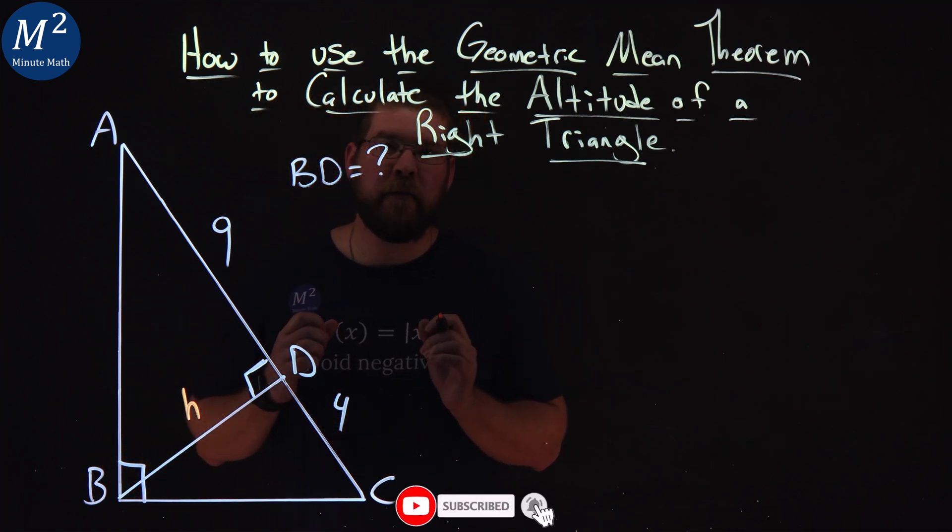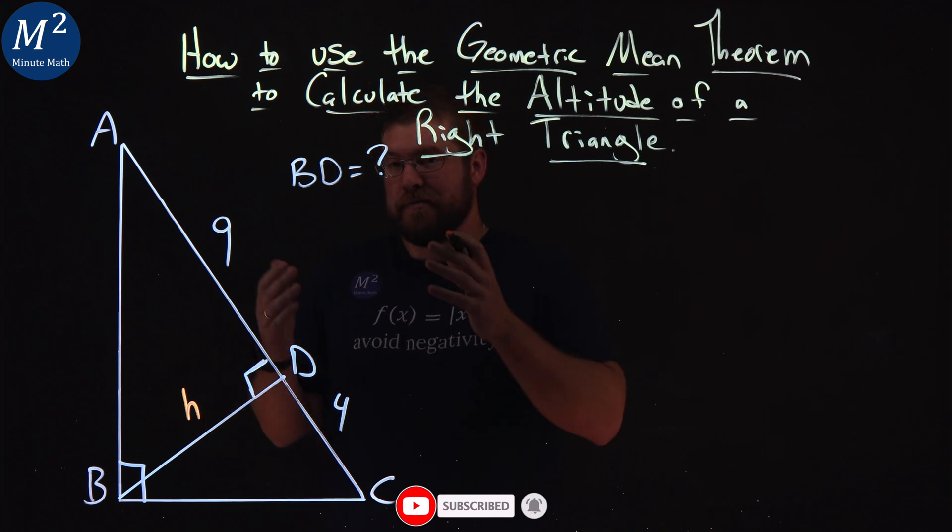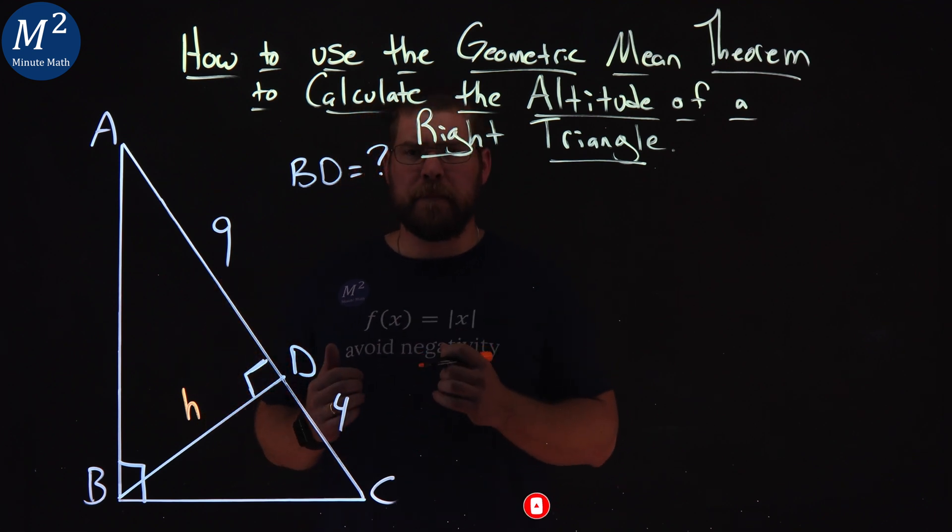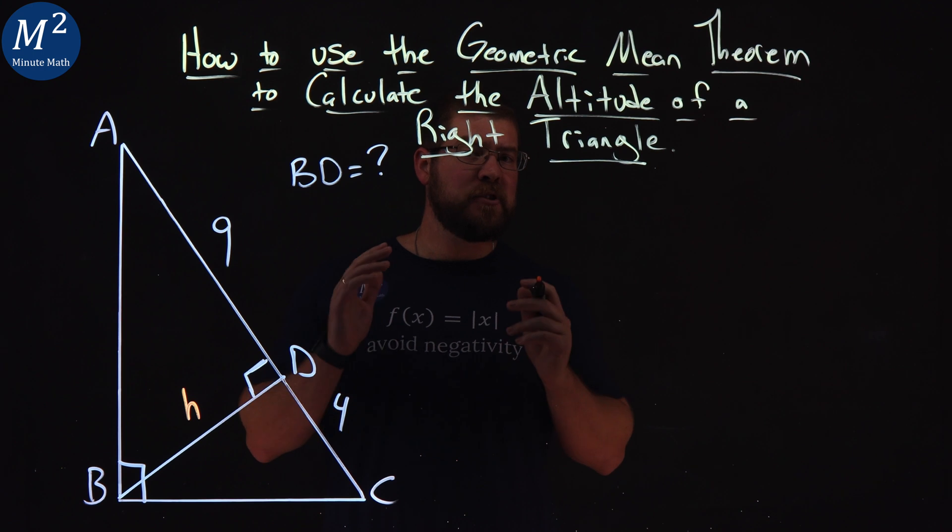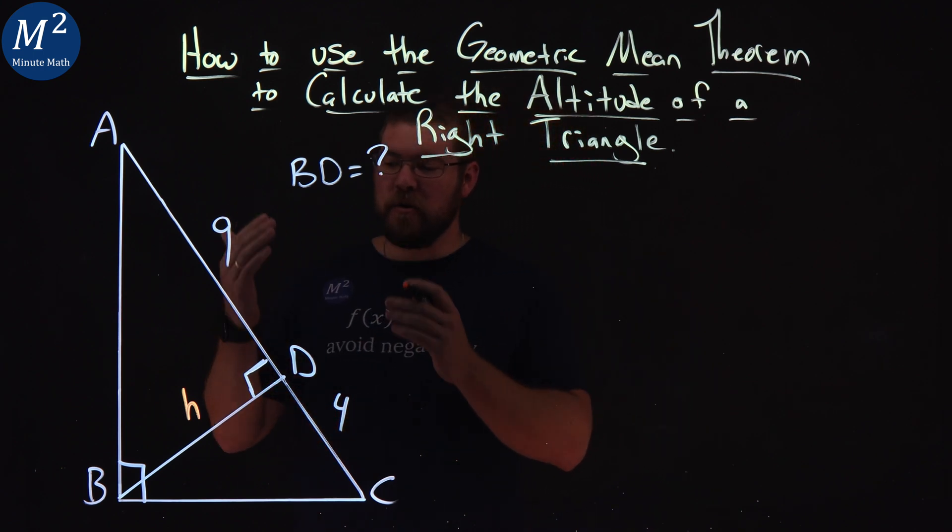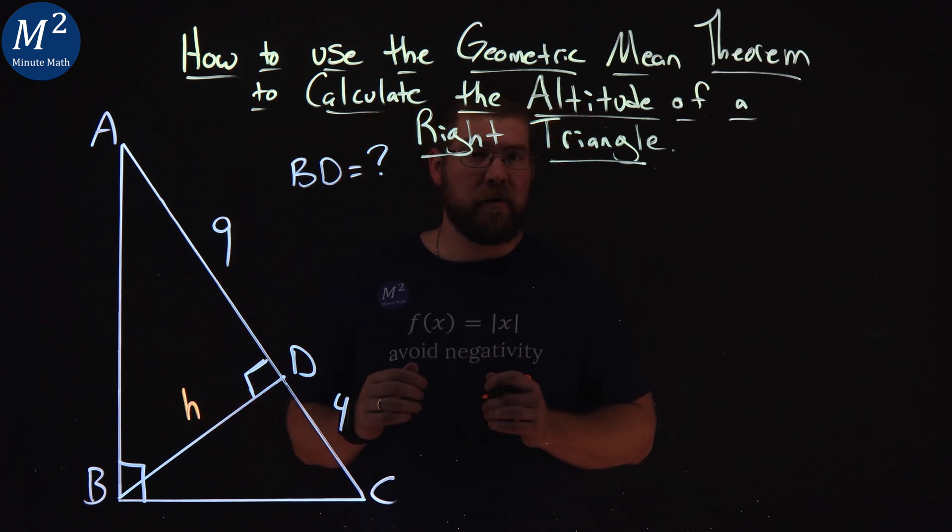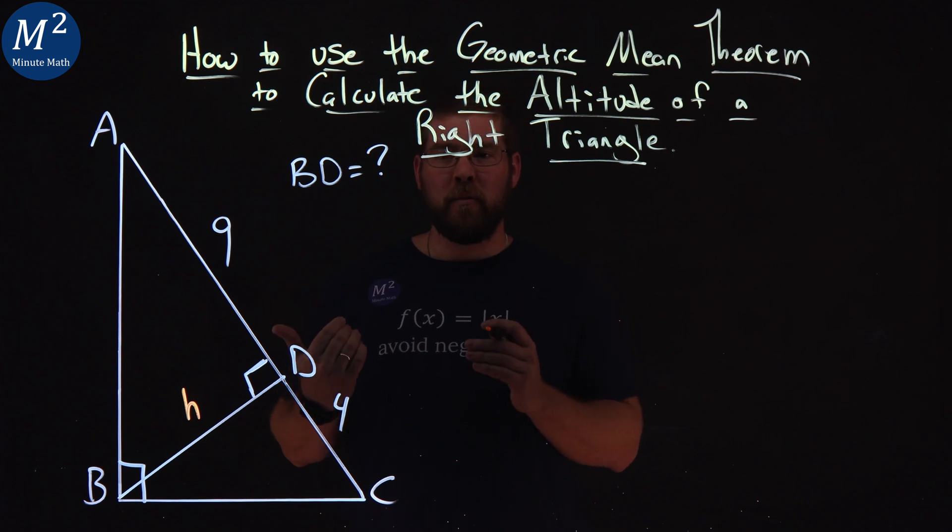With just that information, we can find the altitude of this right triangle here. Now there's actually going to be two other ways, at least two other ways to find the altitude. So I want to see if you can figure those out. But I'm going to show you one way using the geometric mean theorem.